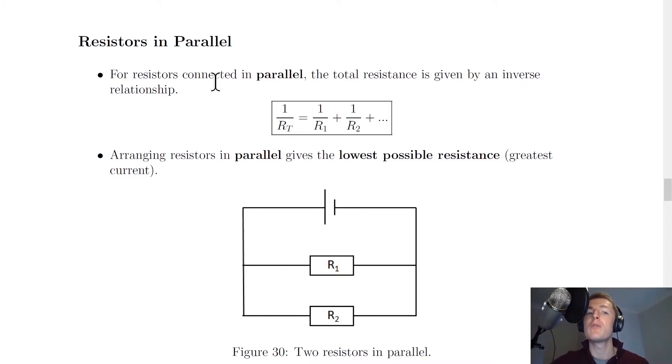as the relationship we saw for resistors in series. So what we see instead is that the total resistance is given by an inverse relationship. What we mean by an inverse relationship is this one-over factor: 1/Rt = 1/R1 + 1/R2 + ... So remember, the dot dot dot